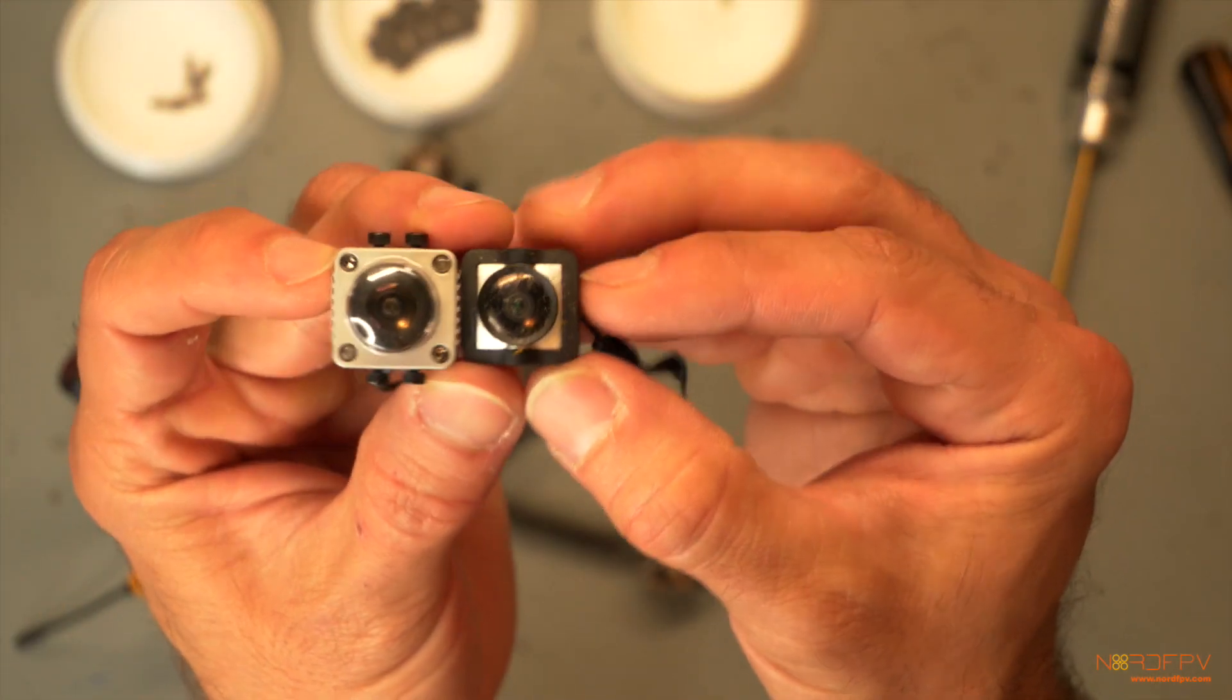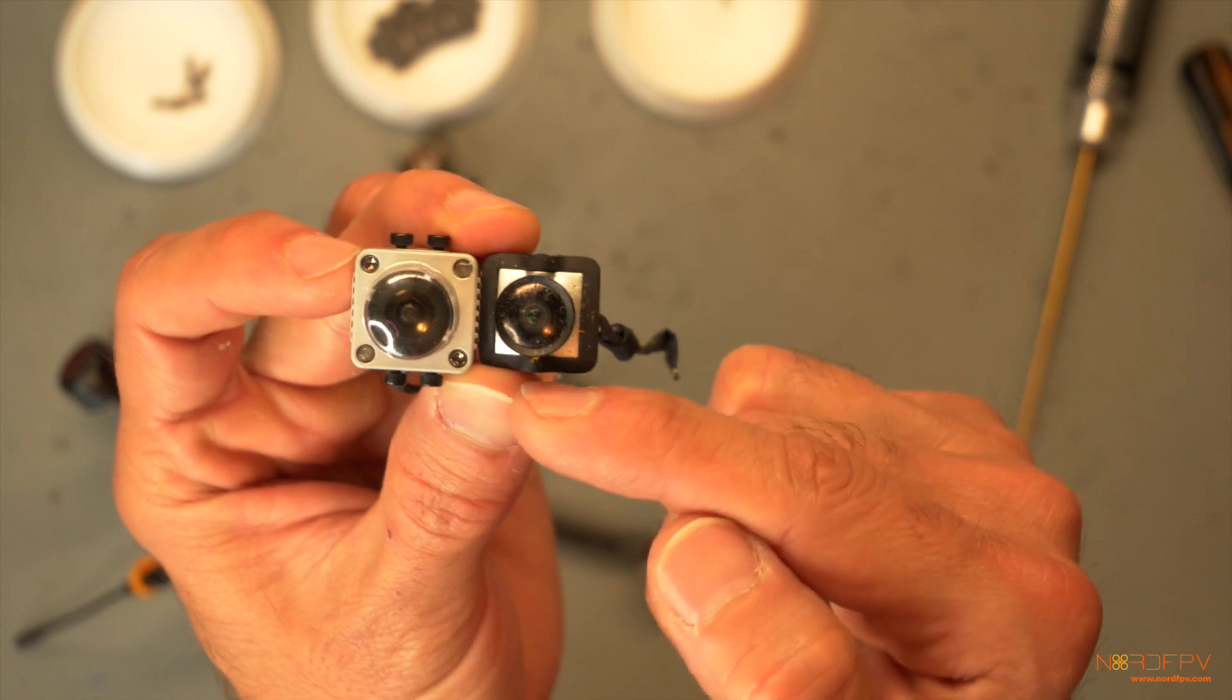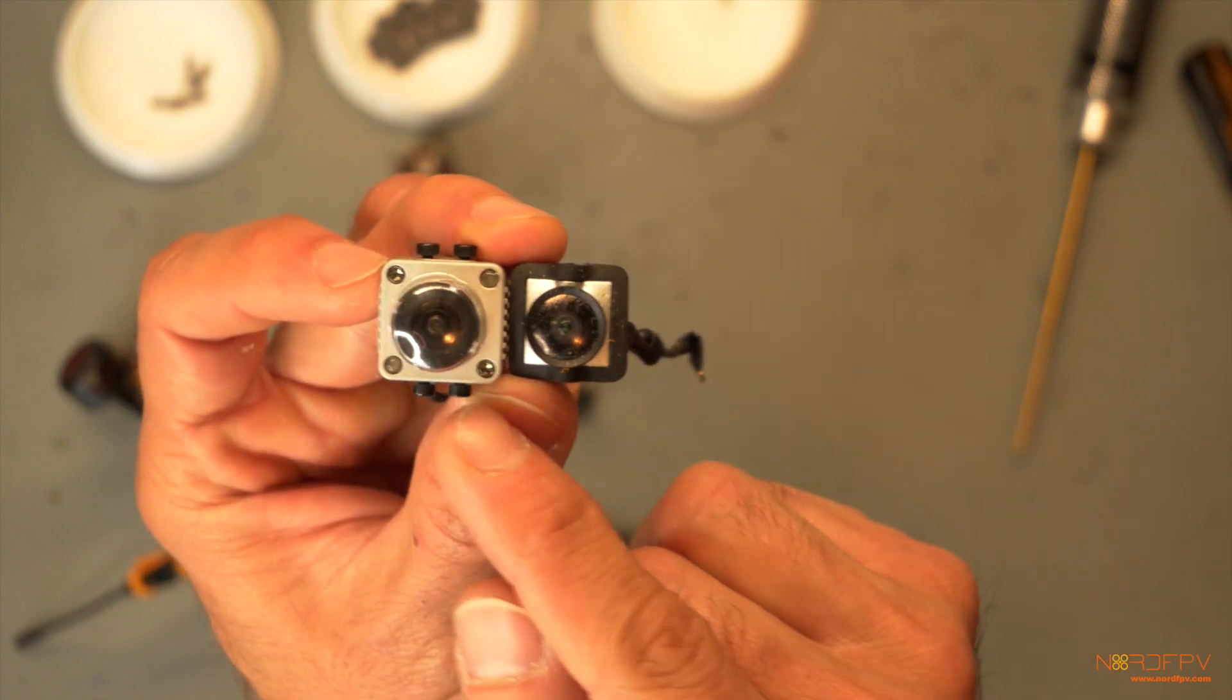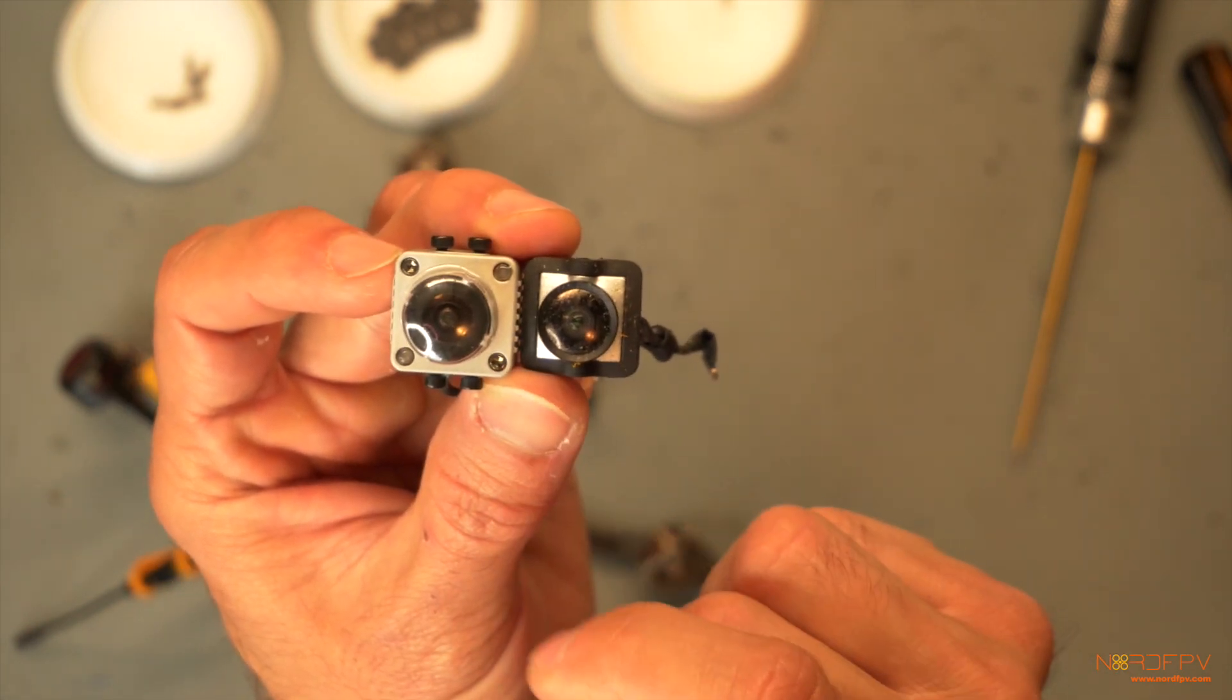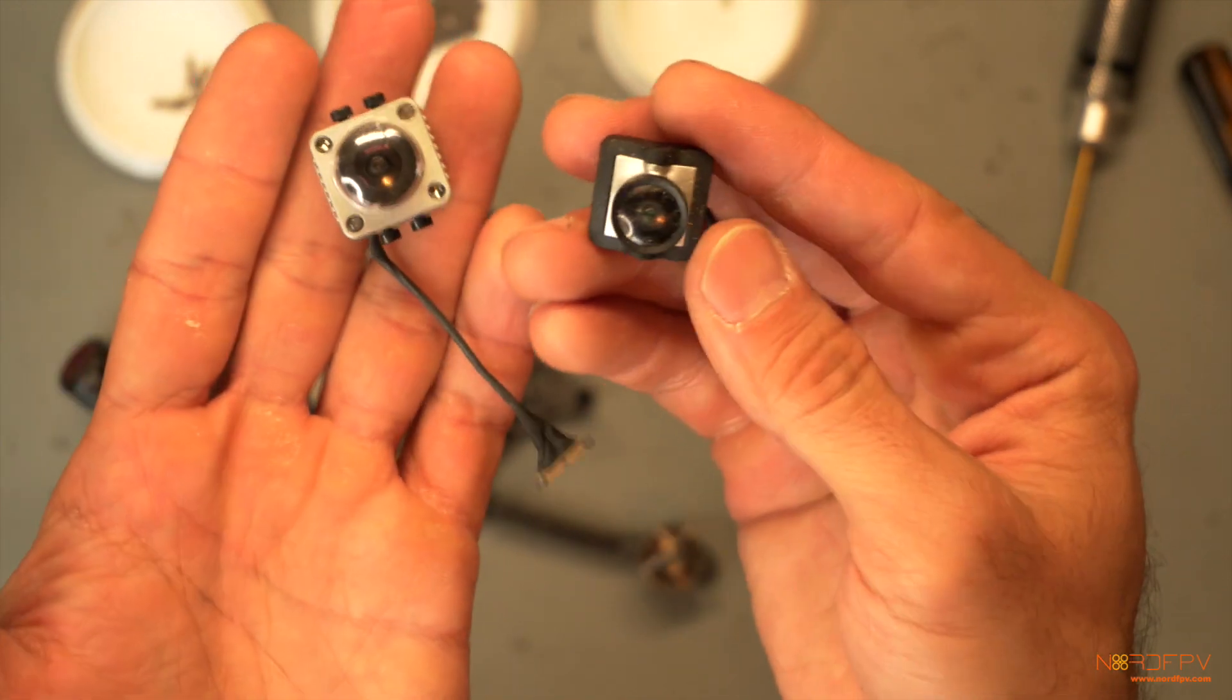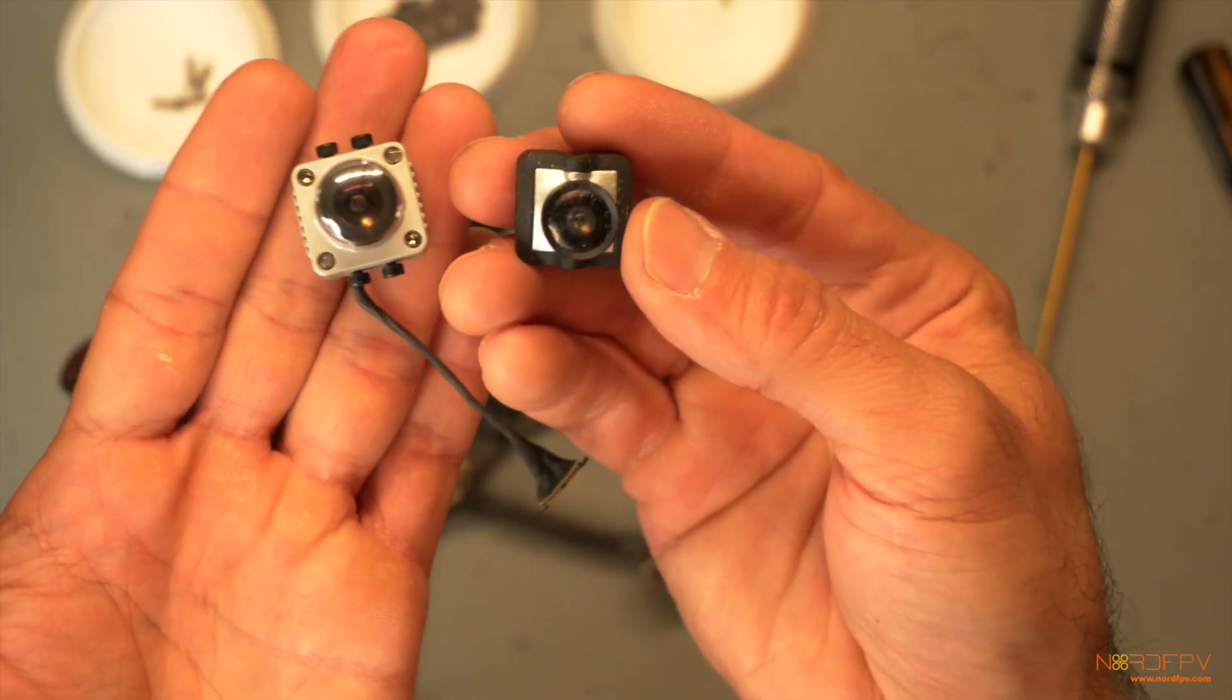You see that because the nano camera has this rubber around, it's the same size as the Vista camera, so it shouldn't be any problem to fit it. The Vista camera is a little bit heavier than the nano, but I'm more than willing to do that exchange.